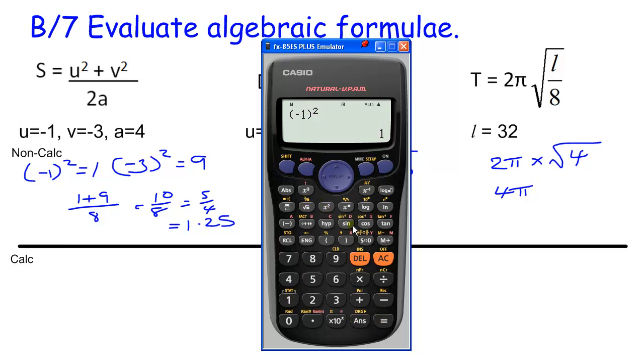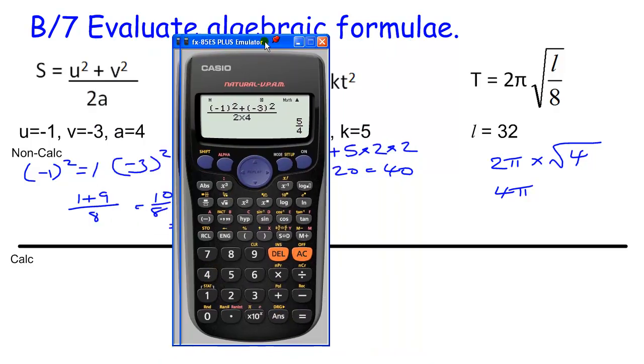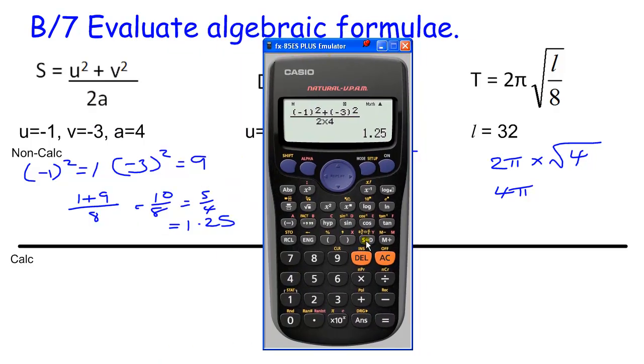So when we type this in, fraction to get the fraction, then open bracket minus 1 squared plus open bracket minus 3 squared, go down to the bottom of the fraction, and we've got 2 times 4. And that gives us 5 over 4 as we had before, or 1.25.